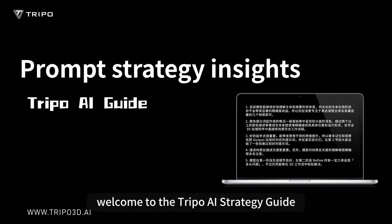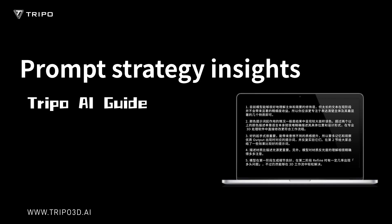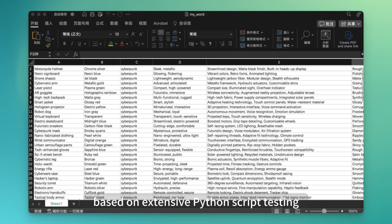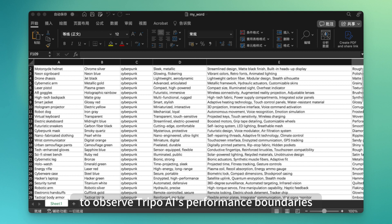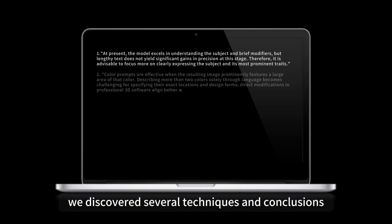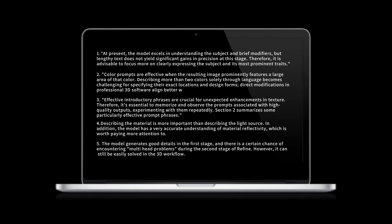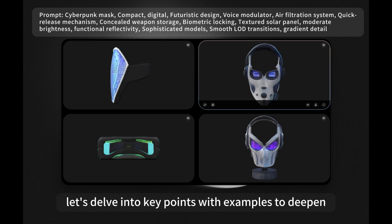Welcome to the TRIPO AI Strategy Guide. In this issue, we share insights on using prompts based on extensive Python script testing of hundreds of models to observe TRIPO AI's performance boundaries. From initially simple adjectival descriptions, we discovered several techniques and conclusions. Let's delve into key points with examples to deepen understanding.